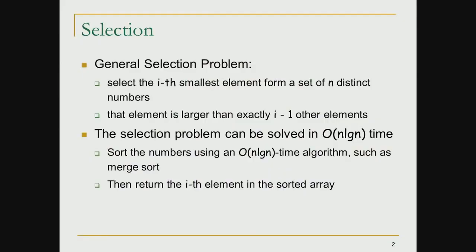The problem in question is: given n distinct numbers, presented in an array, the goal is to find the ith smallest element, where i is also given as part of the input. In other words, we want to find an element which is larger than exactly i minus 1 elements in the given data set. One natural approach is to sort the n distinct elements in ascending order using merge sort, which runs in O(n log n) time, and then return the ith element in the sorted array.